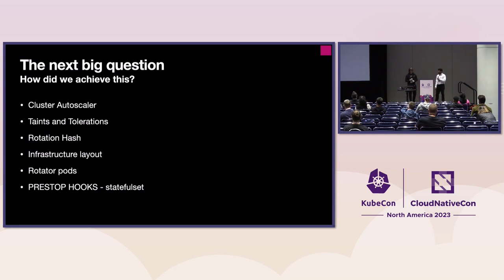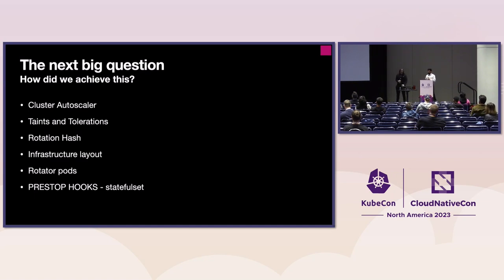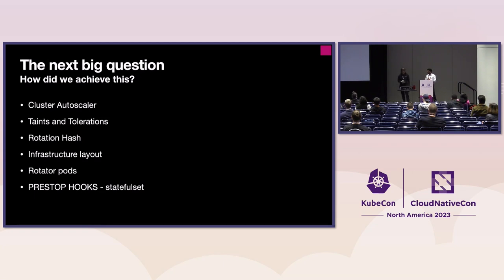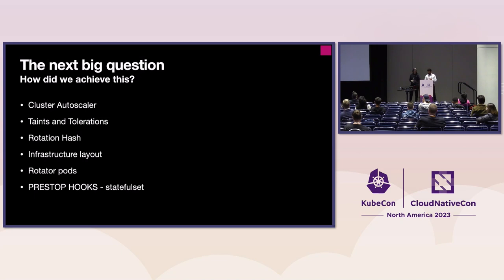We wanted to adopt cloud-native practices. As JMO mentioned, we implemented Cluster Autoscaler, and we also used the concept of taints and tolerations. We introduced a new system — a new way to version our hardware using a RotationHash. We'll talk about the infrastructure layout and how the RotationHash is integrated, and about rotator pods — deployments that we inject the RotationHash with. We'll also touch on how we use pre-stop hooks to make our service more resilient, since we operate a lot of stateful sets.